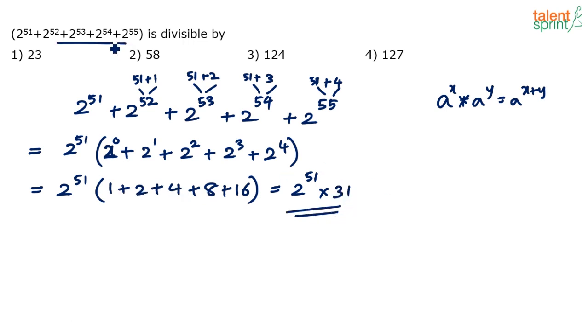So this is the number finally. This complex looking expression has been simplified as 2 power 51 multiplied by 31. So I can say that this number is divisible by 31, but 31 is not there in the options. Yes, I know 31 is not there in the options. Then try and find out, you can still do one thing: you can again split 2 power 51 into parts to see if you find something.